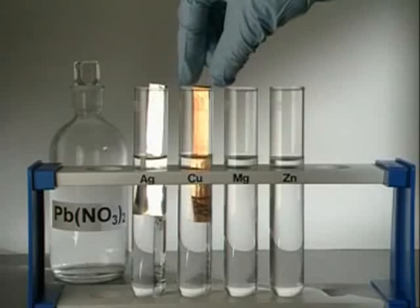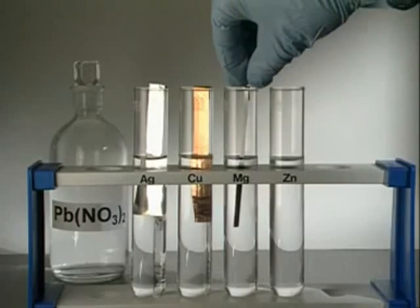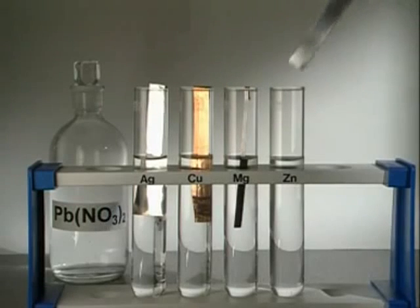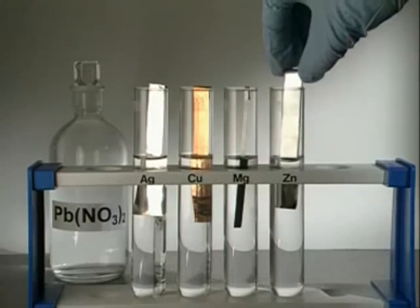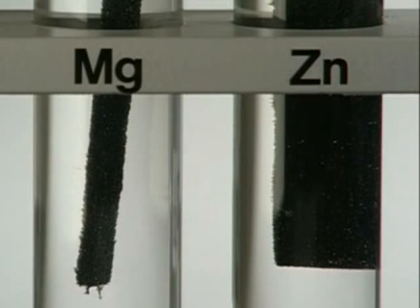Placing the metals in lead nitrate solution provides our first clue. Silver doesn't react and neither does copper, but magnesium and zinc both become coated with a dark grey layer of lead.